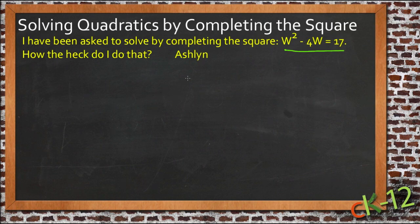So she said that she's asked to solve w squared minus 4w equals 17, and she says, how the heck do I do that?